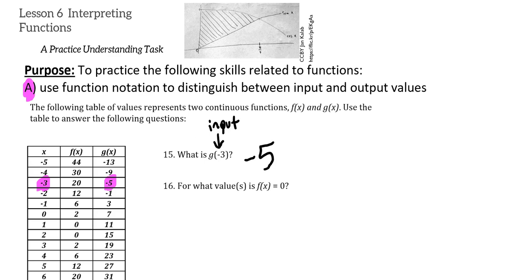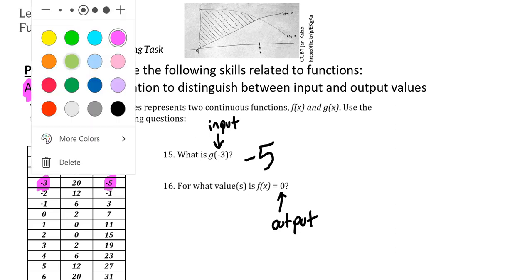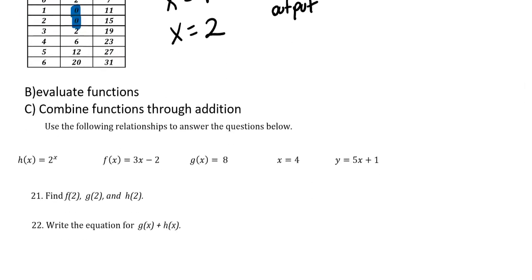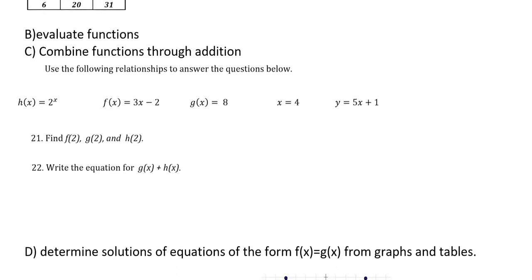On the other hand, for what values is f of x equal to 0? That's an output, so what are the inputs that give us an output of 0? We can see f of x has output of 0 here and here, in two places, so that's going to be x equals 1 and x equals 2 for f of x. So that takes care of objective A.